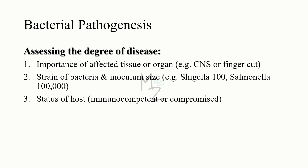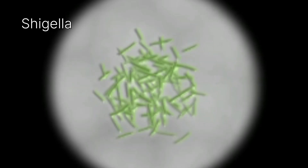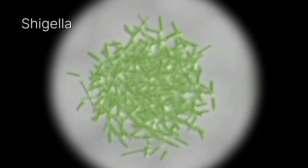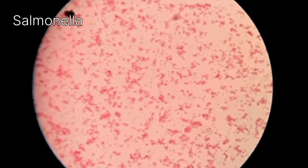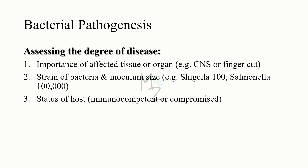Number two: we look at the strain of bacteria — either one strain produced by one bacterium, many strains produced by one bacterium, or different bacteria producing different strains. Also, the inoculum size — the number of organisms required to cause a specific disease. For example, diarrhea is caused by both Shigella and Salmonella, but only 100 Shigella are required to cause diarrhea, compared to 100,000 Salmonella. Number three: we look at the status of the host — either immunocompetent, having strong immunity, or immunocompromised, having weak immunity.